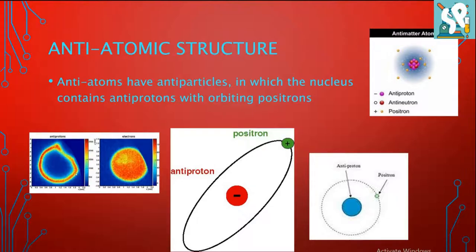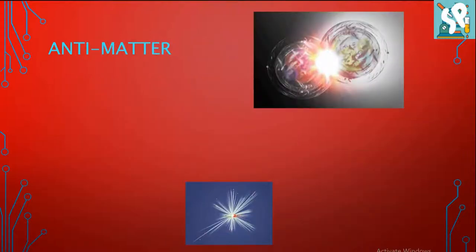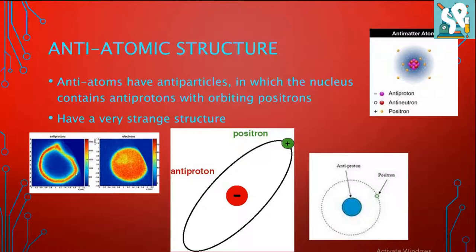With orbiting positrons. In the case of atoms, the electrons surround the protons. In the anti-atom's case, it is different - a very strange structure. Take a moment to study these pictures here. All right, moving on.